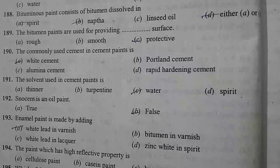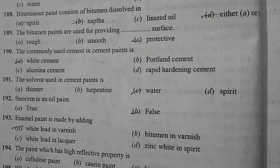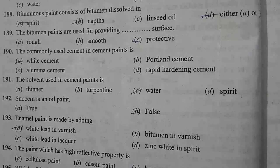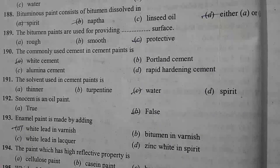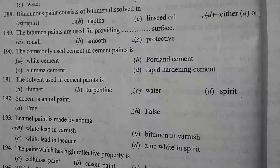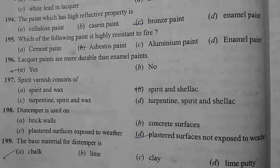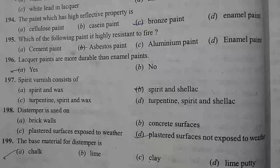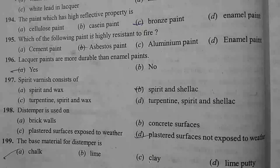The commonly used cement in cement paint is white cement. The solvent used in white cement paint is water. Enamel paint is made by adding white lead in varnish.